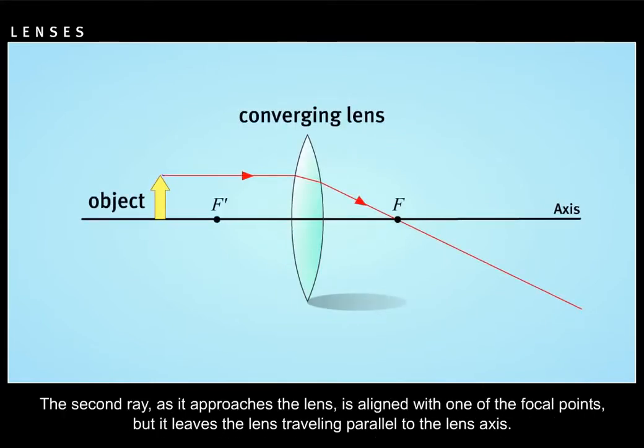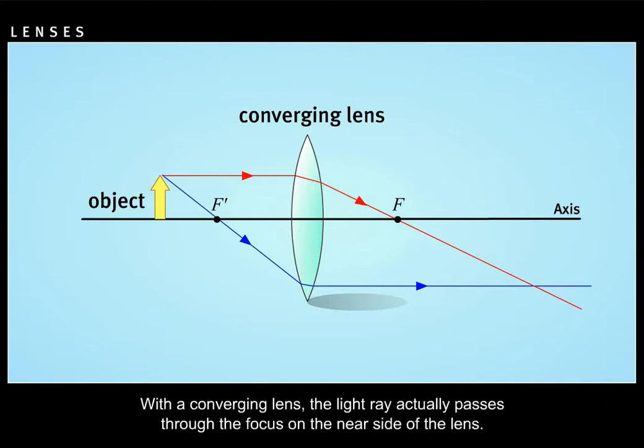The second ray, as it approaches the lens, is aligned with one of the focal points, but it leaves the lens traveling parallel to the lens axis. With the converging lens, the light ray actually passes through the focus on the near side of the lens.